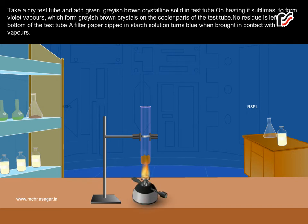it sublimes to form violet vapors, which form greyish-brown crystals on the cooler parts of the test tube. No residue is left at the bottom of the test tube.